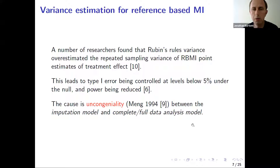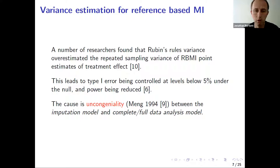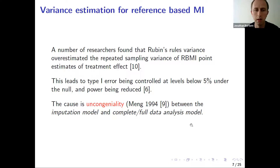Since reference-based multiple imputation was first proposed, a number of researchers found that the Rubin's rules variance estimator overestimated the repeated sampling variance of the reference-based multiple imputation estimate of the treatment effect. That overestimation leads to the type 1 error rate being controlled at levels below the nominal level — for example, 5% — and when there is a treatment effect, power is reduced relative to if the true repeated sampling variance of the point estimator were used. The cause of the upward bias in Rubin's variance estimator is uncongeniality between the reference-based imputation model and the complete data analysis model.